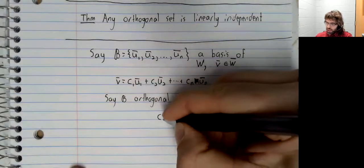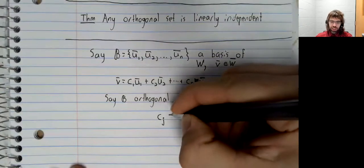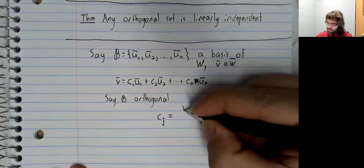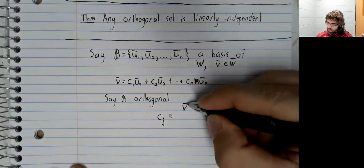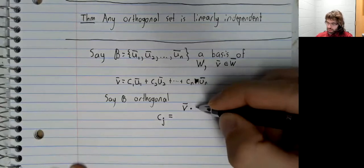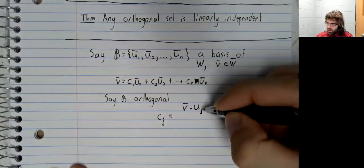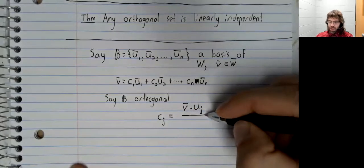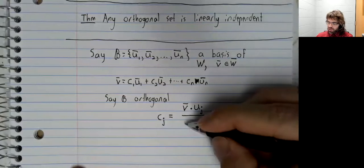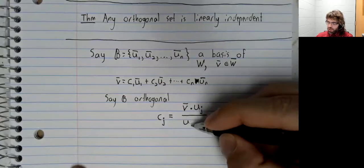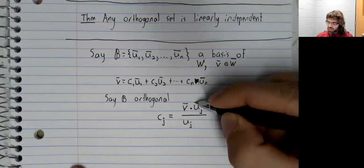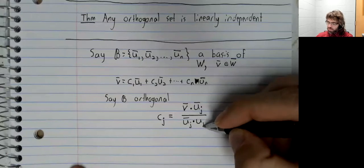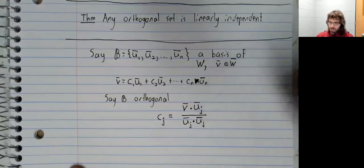To find the jth coefficient, you take this vector, you would dot it with the jth basis vector, and then you divide that with the jth basis vector dotted with itself.